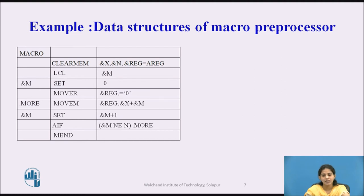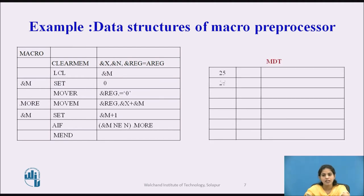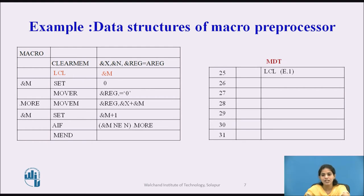Next we generate the Macro Definition Table. The MDT pointer values are 25, 26, 27, 28, 29, 30, 31. We first process the statement LCL &M. For this statement we write LCL as-is, and for &M, which is an expansion time variable, we generate the specification in the form (E, #N). E indicates expansion time variable, and #N indicates the entry number in the EVN tab.